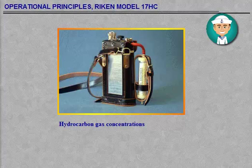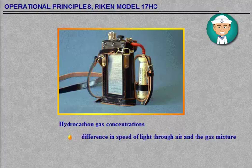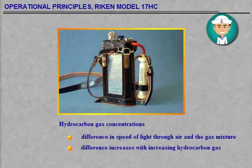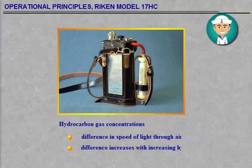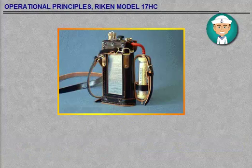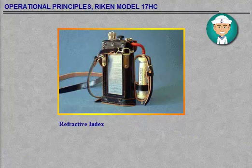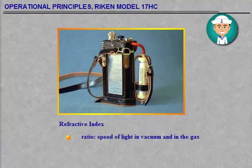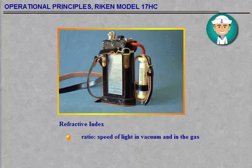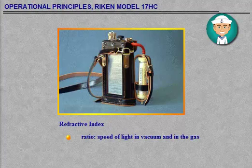With the RECON-17HC, concentrations of hydrocarbon gases can be measured by utilising the difference in the speed of light through air and through the gas mixture being measured. The difference increases with increasing hydrocarbon gas concentration. The refractive index for a gas is an expression of the ratio between the speed of light in vacuum and in the gas. The speed in the gas will depend on pressure and temperature, and the refractive index is normally quoted for a pressure of one atmosphere and either 0°C or 20°C. Compared with the refractive index for the various hydrocarbon gases, the index of the hydrocarbon mixture used by RECON is closest to butane.